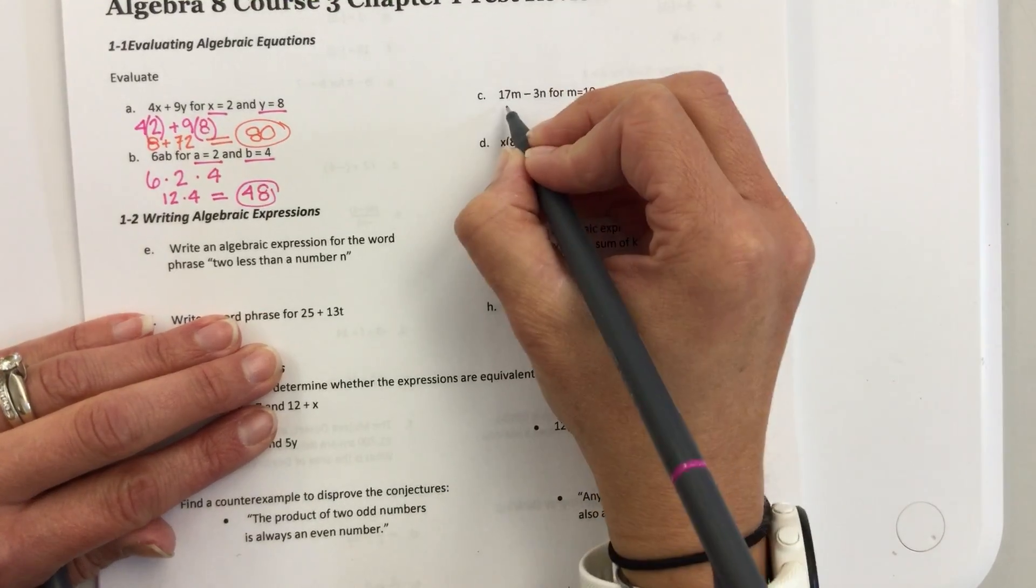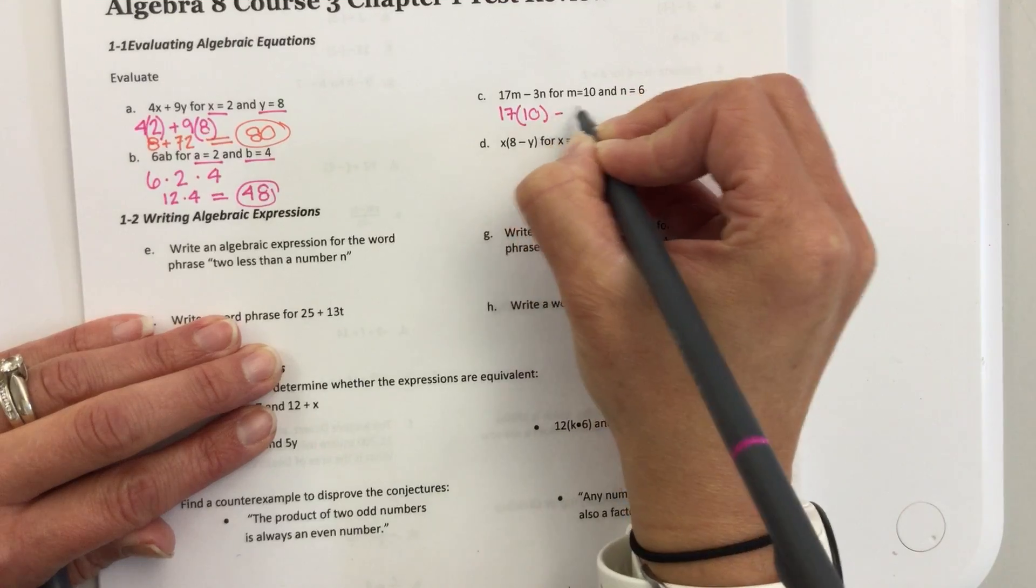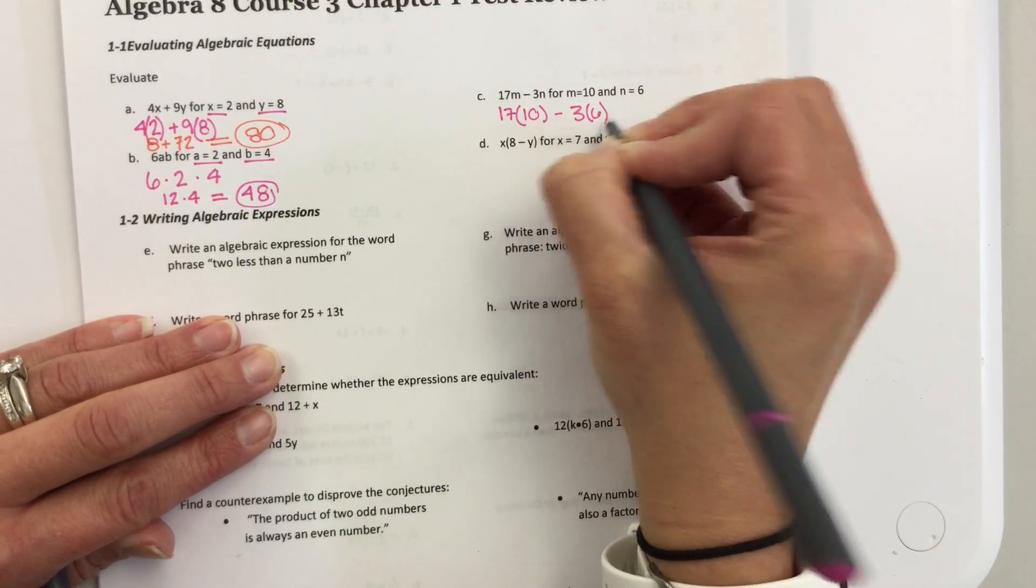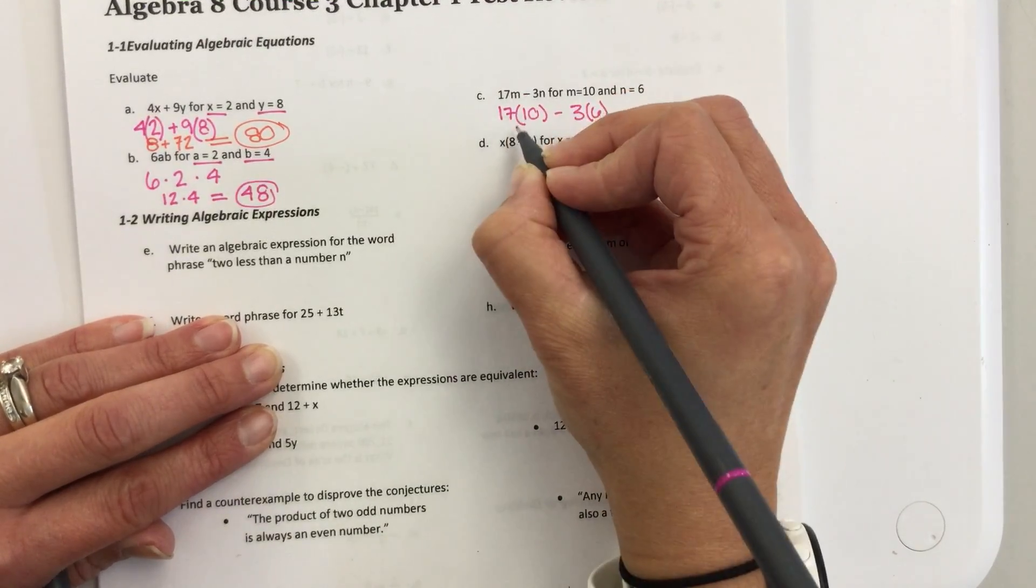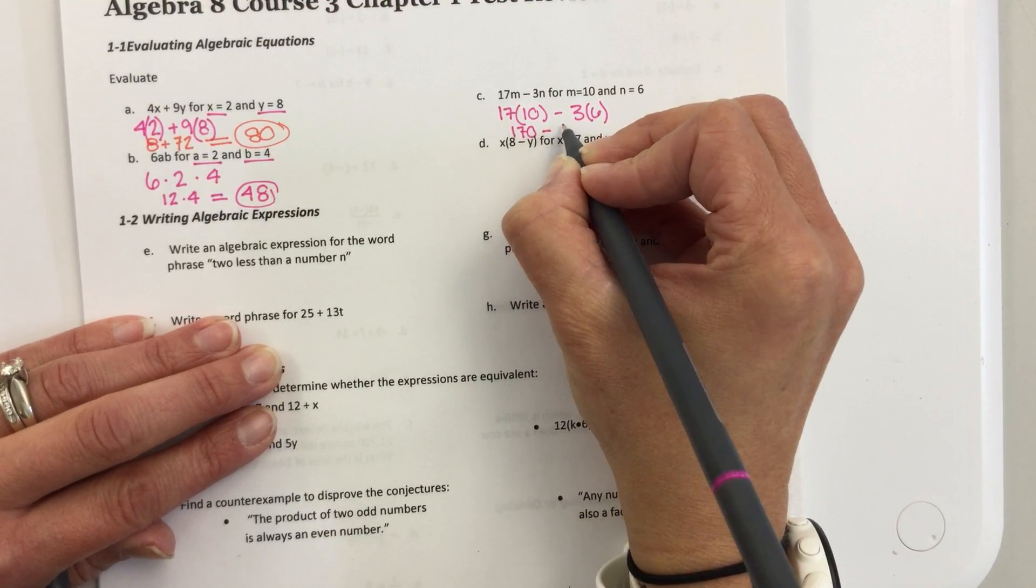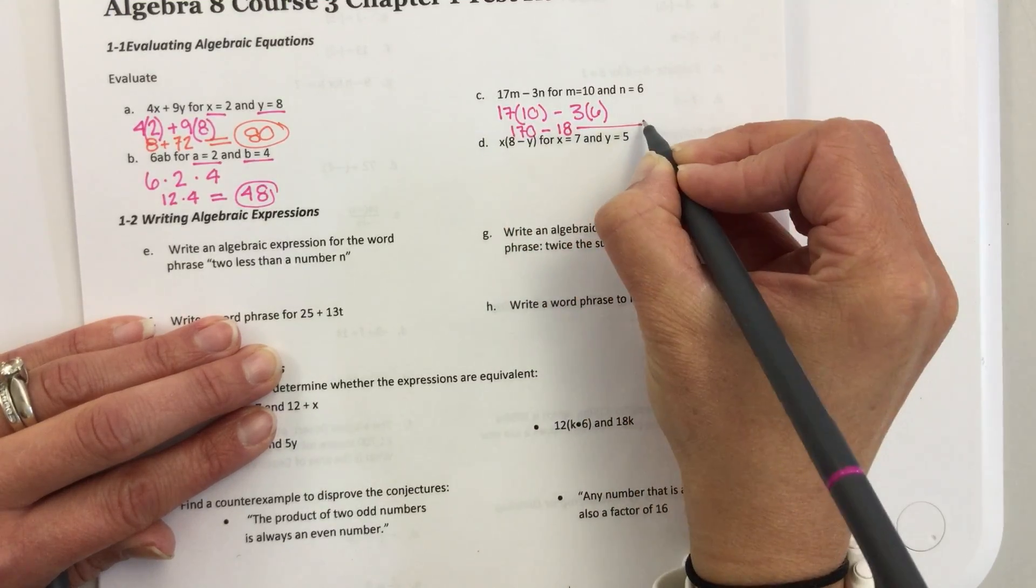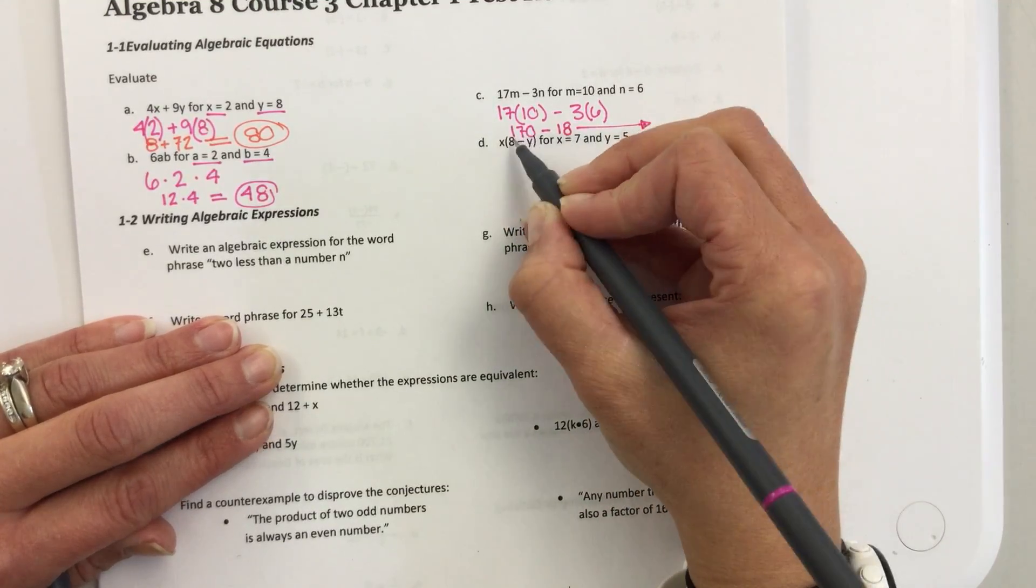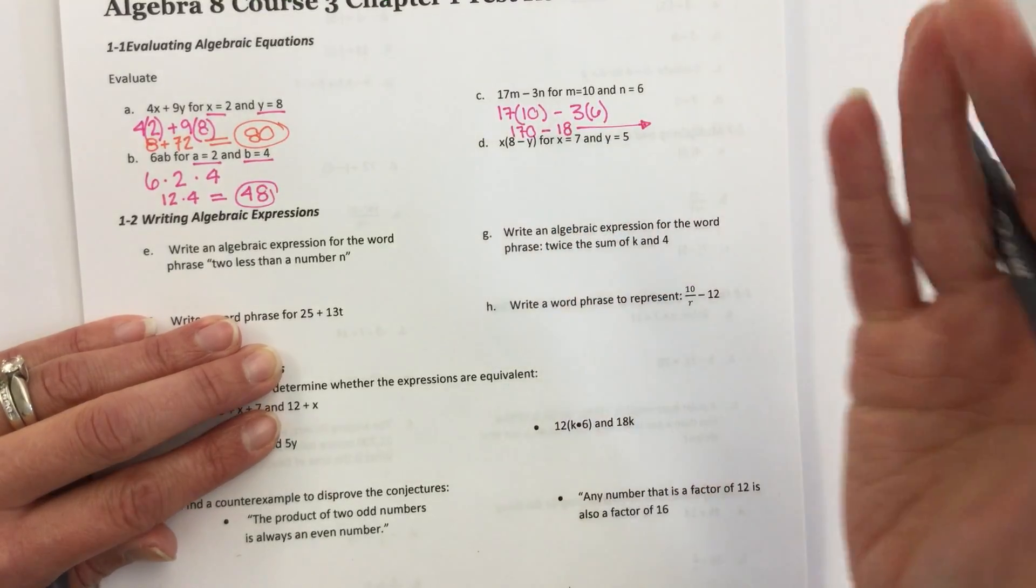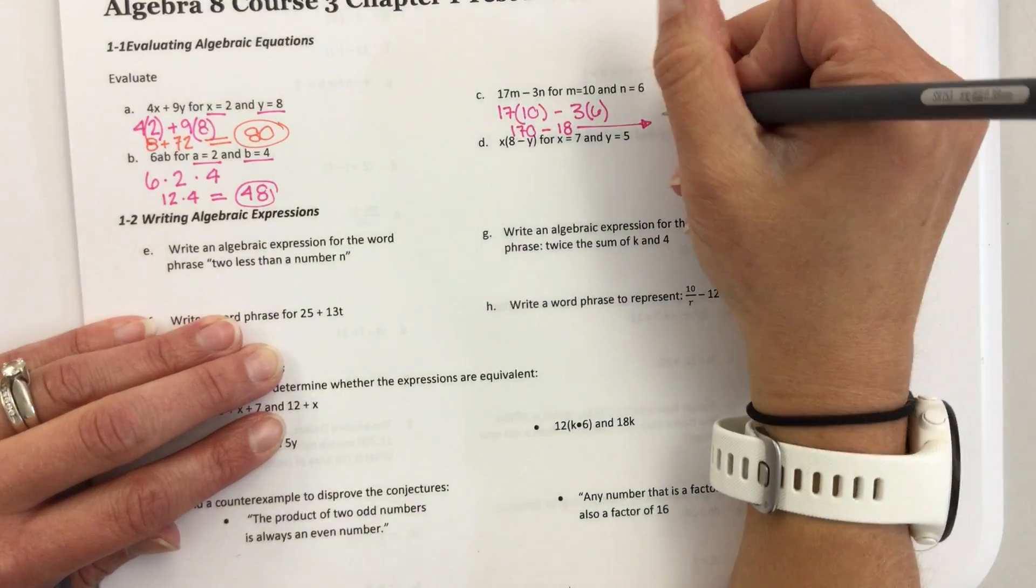Okay, again, 17 times 10 minus 3 times 6. 17 times 10 is 170. 3 times 6 is 18. So, 170 minus 18. Sometimes I do like 170 minus 20, and that would be 150, and then just add back 2.